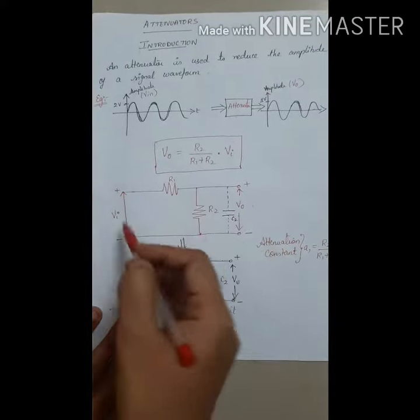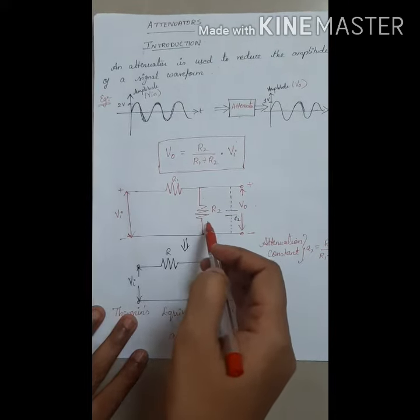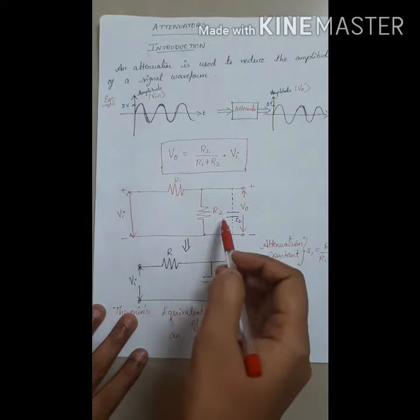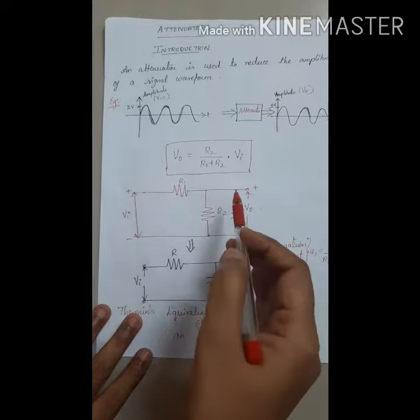This circuit is an attenuator. Two resistors are used where the voltage is dropped, and at the output a stray capacitance exists. Due to this, the amplitude is reduced.